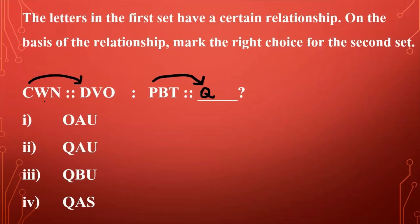What about the second letter? W and V — V is the letter before W. So the letter before B is A, meaning our second letter should be A. Coming to the third letter, after N comes O; following the same relationship, after T comes U. So our next term is Q, A, U.